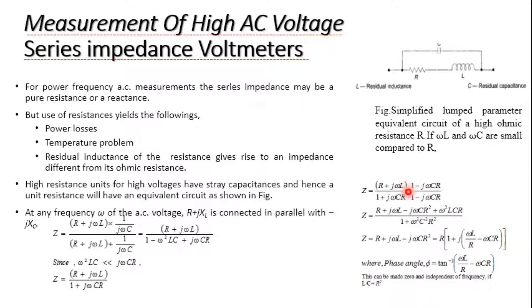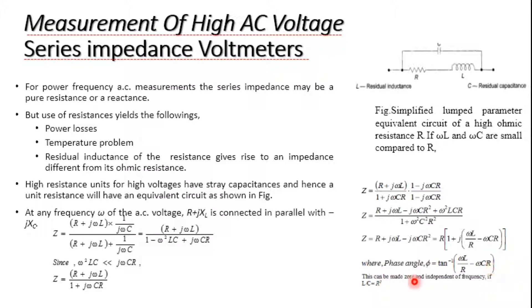Multiplying numerator and denominator by (1 − jωCR) and simplifying gives the final equation: Z = R(1 + jωCR) with phase angle φ = tan⁻¹(ωL/R − ωCR). This phase angle can be made zero and independent of frequency if L/C = R².